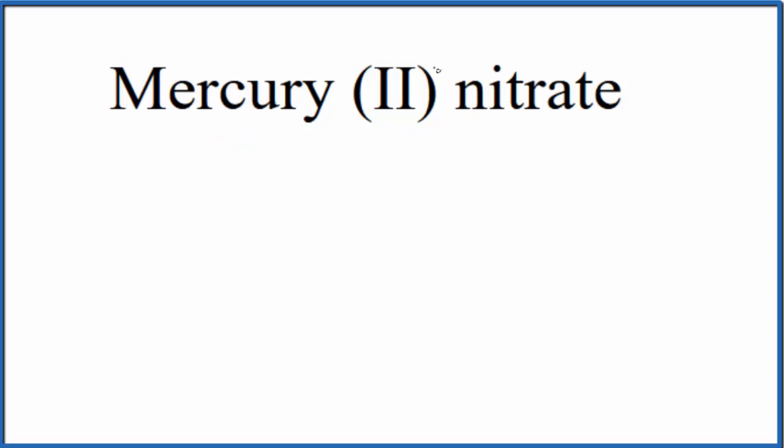We see that we have the Roman numeral 2 in parentheses here. That means mercury is going to be a transition metal. So we write the element symbol for mercury, Hg, and we know the 2 means it'll be 2+.